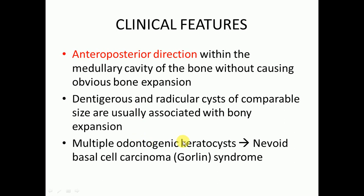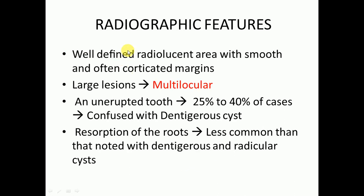Multiple odontogenic keratocysts are present in nevoid basal cell carcinoma, also known as Gorlin syndrome. Radiographically, OKC presents as a well-defined radiolucent area with smooth and often corticated margins. If large, it will be multilocular and may be associated with an unerupted tooth in 25 to 40 percent of cases, which can be confused with dentigerous cyst. Root resorption may occur but is less common than in dentigerous and radicular cysts.